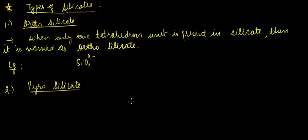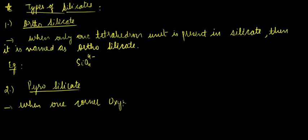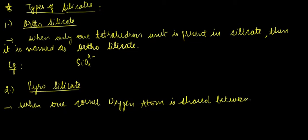Pyrosilicates are formed when one corner oxygen atom is shared between two tetrahedron units.